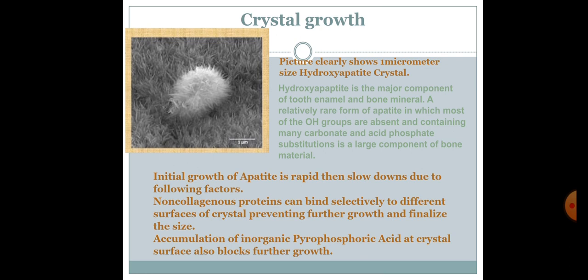Crystal growth: The picture clearly shows a one-micrometer-sized hydroxyapatite crystal. It is the major component of tooth enamel and bone mineral. A relative of apatite in which most of the OH groups are absent, containing many carbonate and acid phosphate substitutions, is a large component of bone material. Initial growth of apatite is rapid, then it slows down due to the falling vector. Non-collagenous proteins can bind selectively to different surfaces of the crystal, preventing further growth and finalizing size. A combination of inorganic pyrophosphate and the crystal surface also blocks further growth.